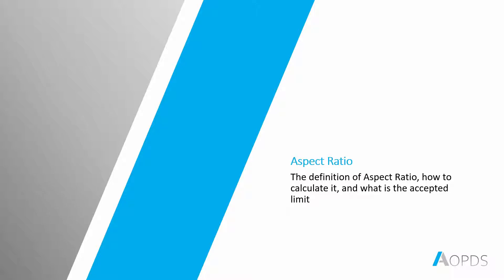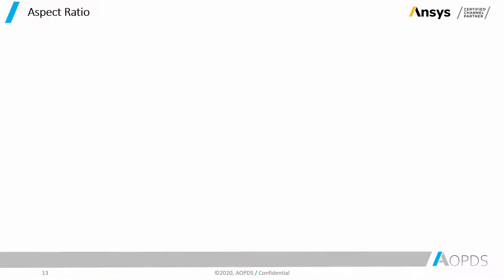First, let's talk about the definition of aspect ratio. Aspect ratio is the element's deviation from having all sides of equal length. A high aspect ratio occurs in bad shapes, meaning long and thin elements.